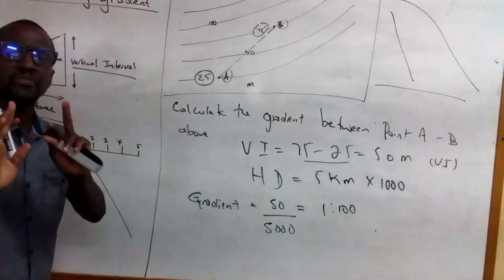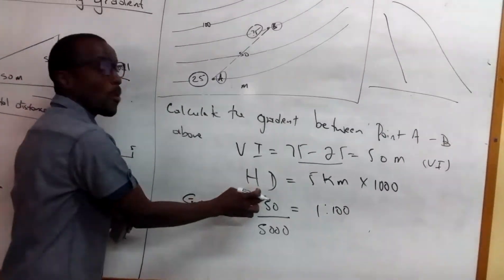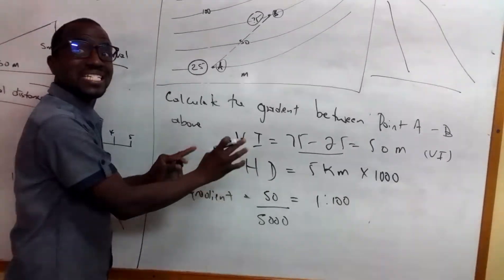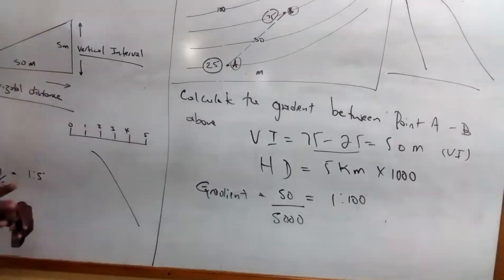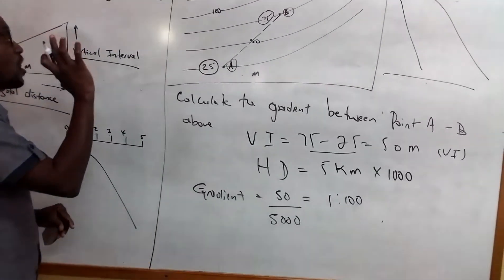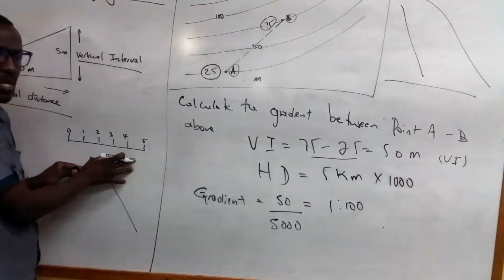So now that I have done my VI, I need to now work out my horizontal distance. In calculating the horizontal distance, I need to make note of the scale.